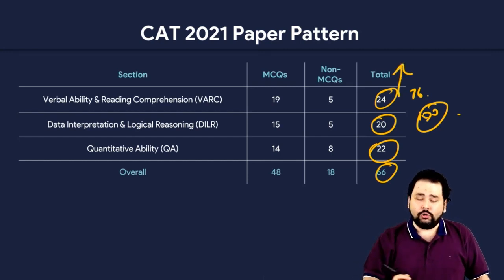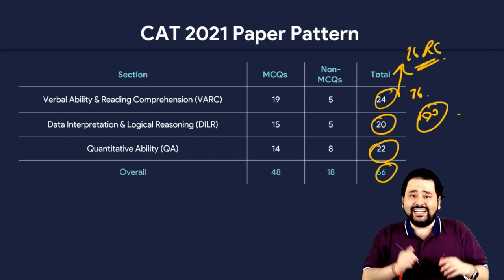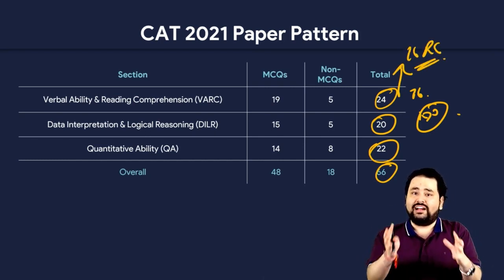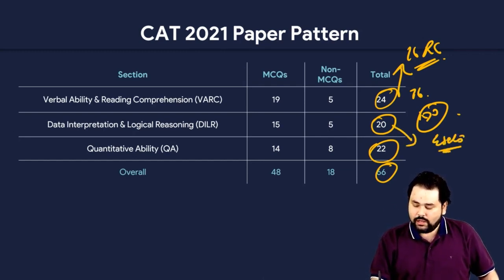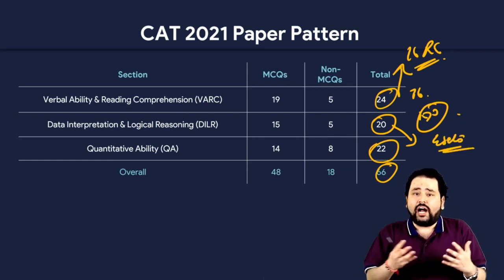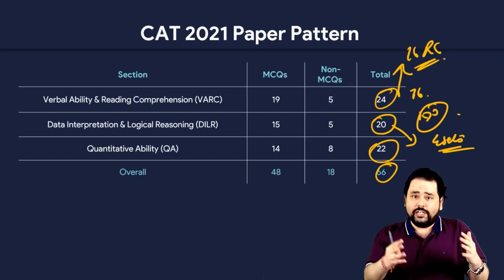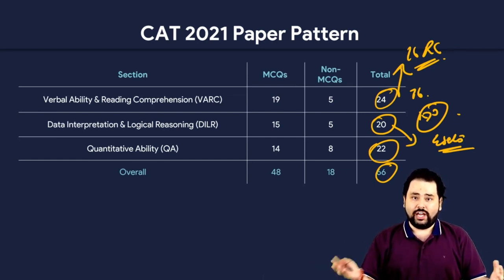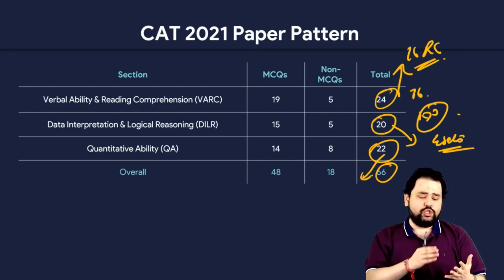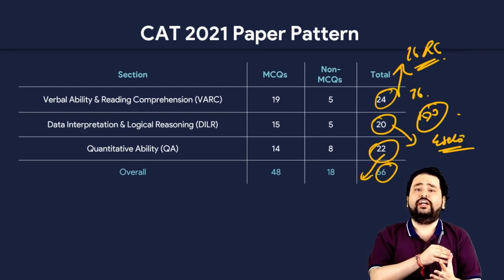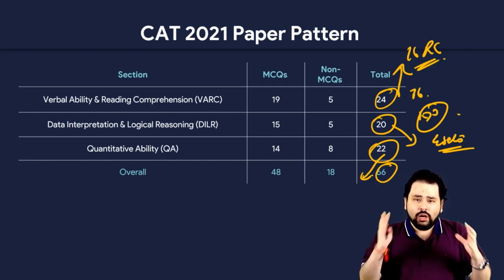Out of the 24 questions in Verbal, 16 were RC — that's two-thirds of the Verbal paper, which tells you how much RC matters. Out of the 20 in DILR, you're looking at four sets: two sets of four questions each and two sets of six questions each, totalling 20 questions. In Quant, 22 questions cover arithmetic, algebra, numbers, geometry, and modern math — something we'll discuss in the Quant section.